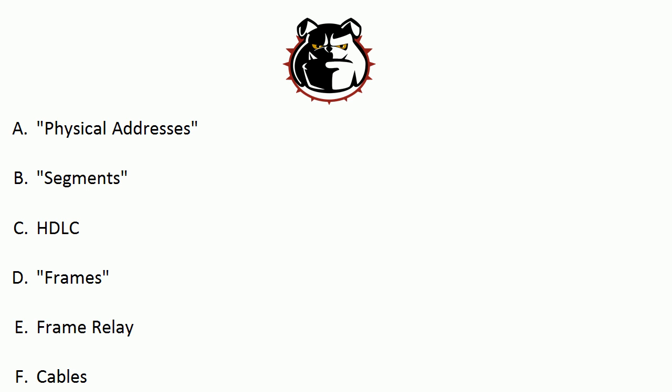Frames — you're going to find those at the data link layer as well, as is frame relay, because frame relay of course is one of the encapsulations we usually use instead of HDLC. Finally on this particular list we've got cables. And you might say, well Chris, that's pretty vague — we have many cables. And we do, but they all run at the physical layer. Anything you can hold in your hand like a cable is going to be at the physical layer of the OSI model.